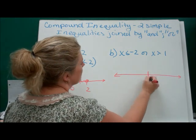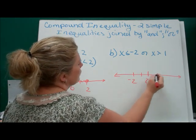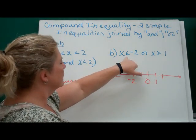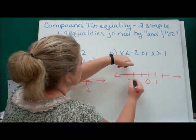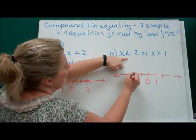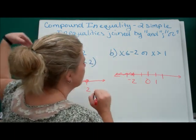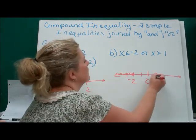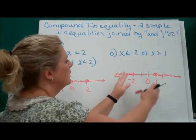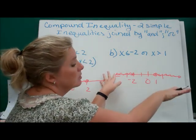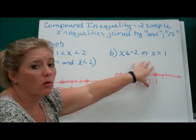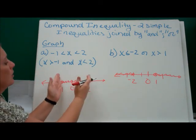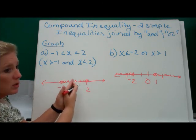Here's our number line with 0, negative 2, and 1. For 'x is less than or equal to negative 2,' we draw a dot and shade less than that. For 'x is greater than 1,' there's no or-equal-to, so it's an open circle, and we shade everything greater than. We've got this open space in the middle and shading on either side — that's an 'or.' Every single 'or' will look like that. An 'and' is open on the sides with the region between two numbers shaded.